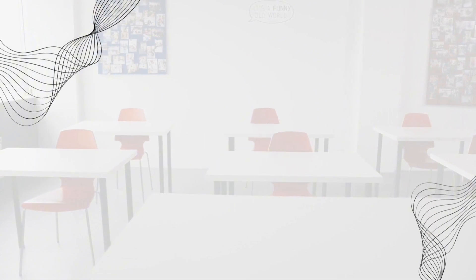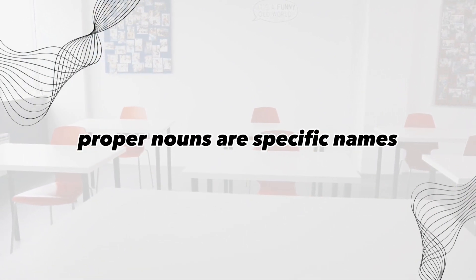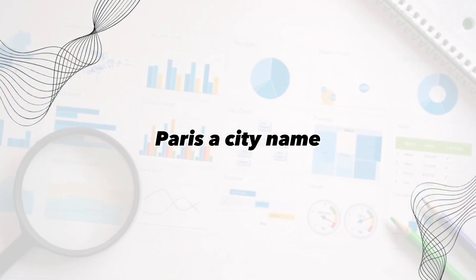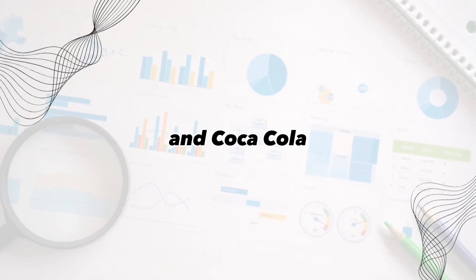Proper noun. Proper nouns are specific names referring to particular entities. Examples: John, a person's name, Paris, a city name, and Coca-Cola, a brand name.